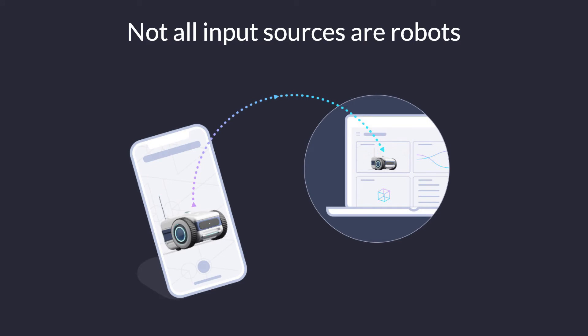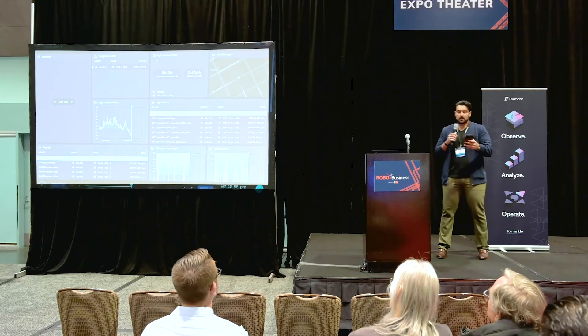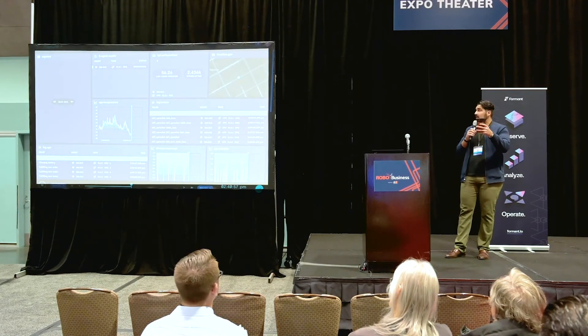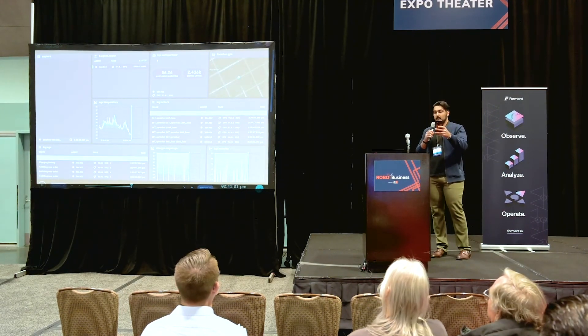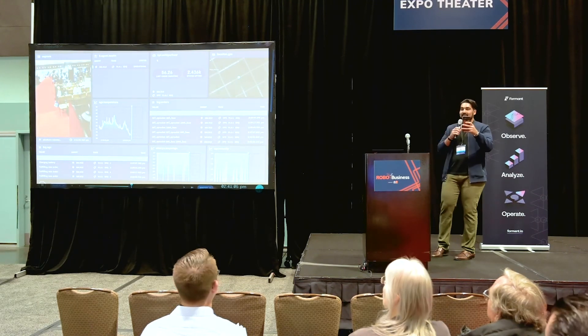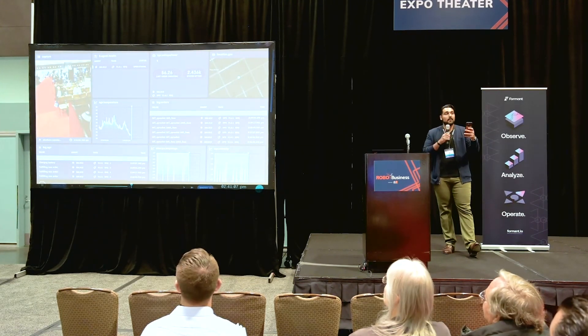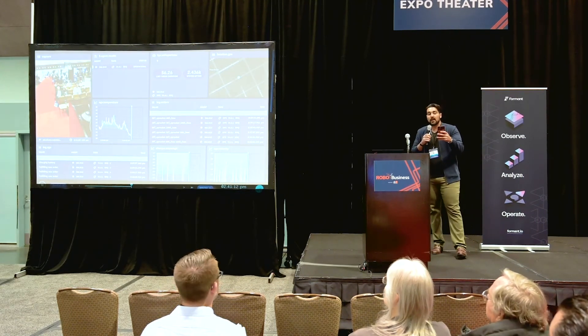Not all input sources are robots. Going to do a live demo here, so hopefully this works. One thing we see a lot is your robots have cameras, tools, and utilities, but you might have an operator who doesn't know what's going on with the robot — something's broken. So there you guys are. You want to be able to record in real time what's happening, add some annotations to it, and have input sources that are not just your robot.